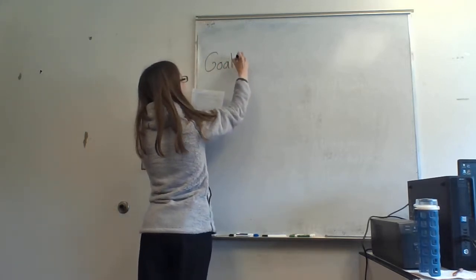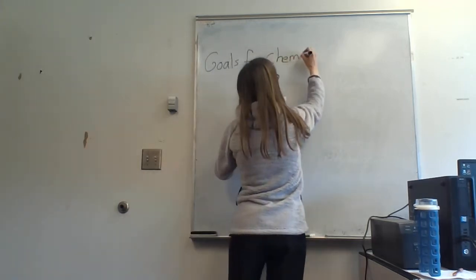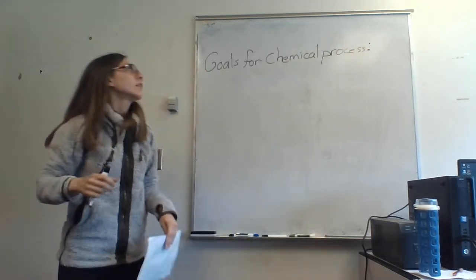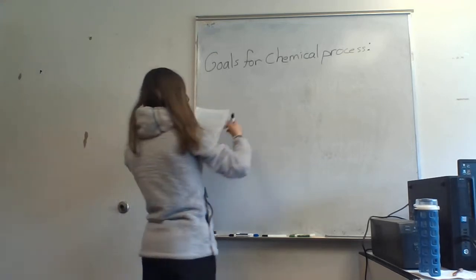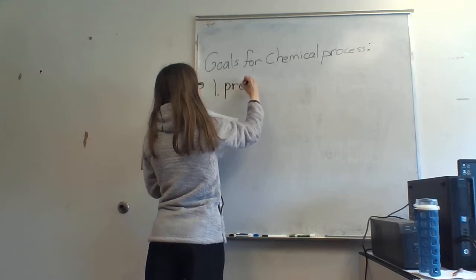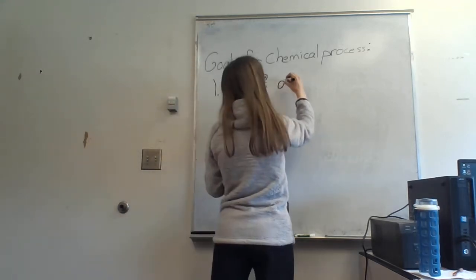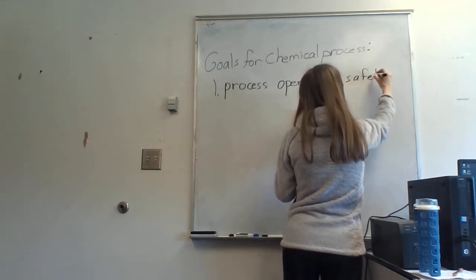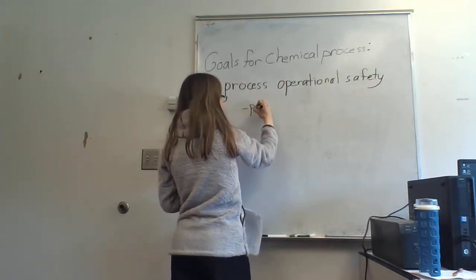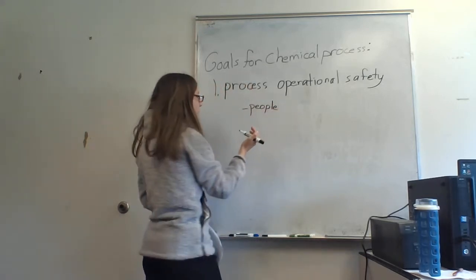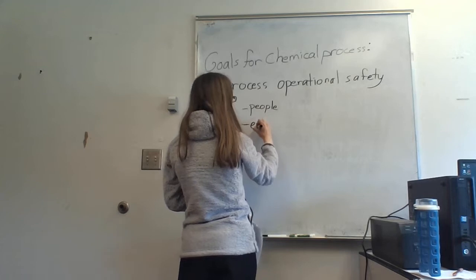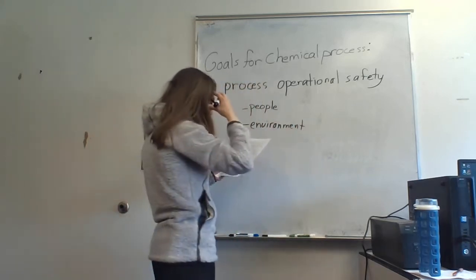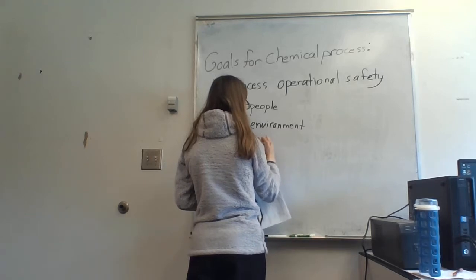Some goals we have for a chemical process: first and most importantly, you want it to be safe — process operational safety. No explosions, no hurting people, no hurting the environment. This applies to people, human life, no injuries, and also meeting your environmental regulations. It also applies to equipment, because if equipment is in an unsafe situation, that can quickly lead to people and the environment getting into an unsafe situation.